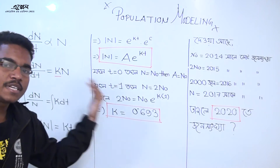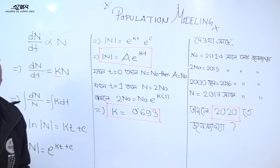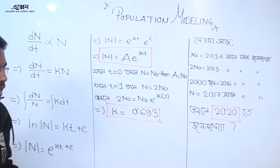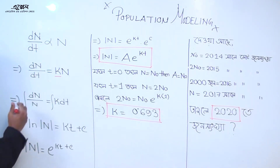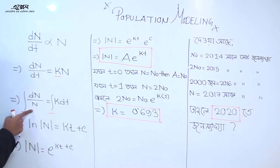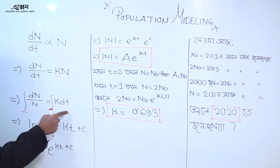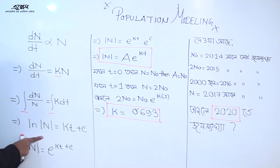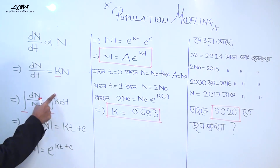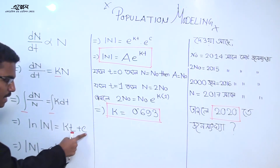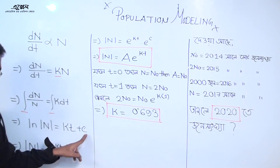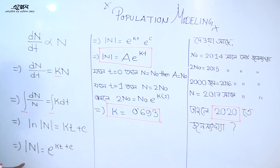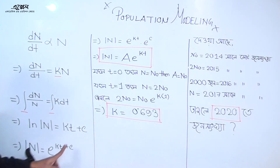That means we have to do a simple thing. We integrate it as bn by n, k into dt, and bn by n is equal to ln. This is kt plus c, and then we transfer the exponential constant.